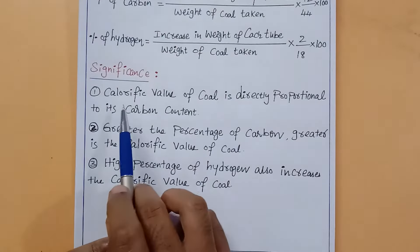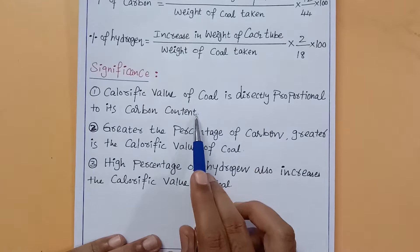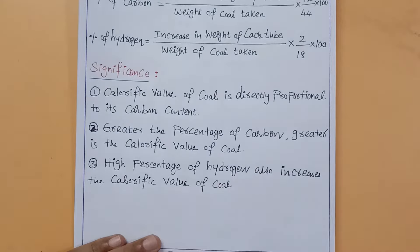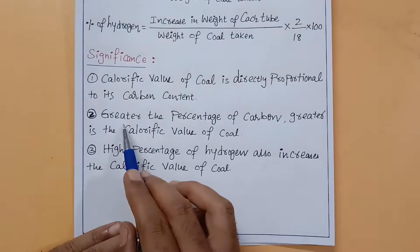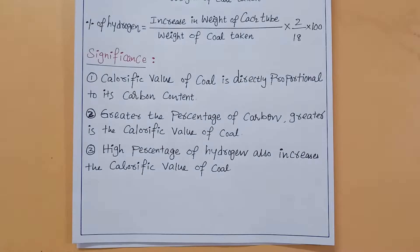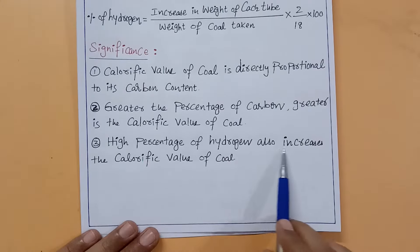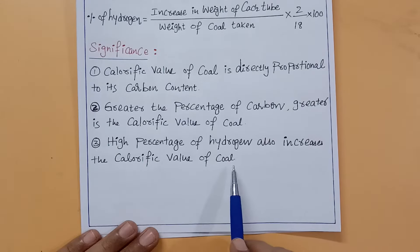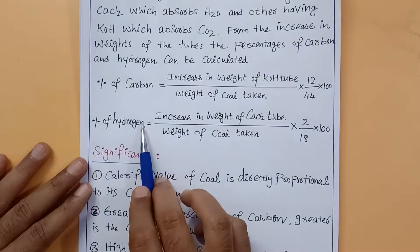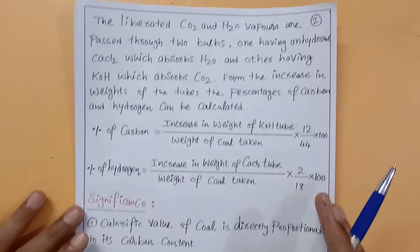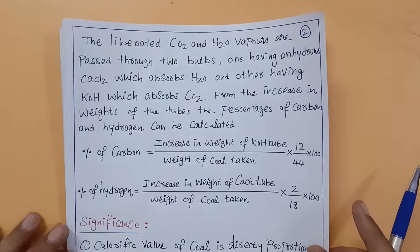The calorific value of coal is directly proportional to its carbon content. Greater the percentage of carbon, greater is the calorific value of coal. A high percentage of hydrogen also increases the calorific value of coal. So carbon and hydrogen determination is important.